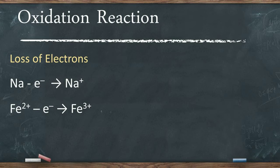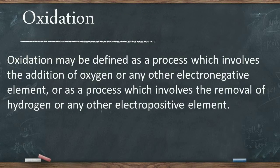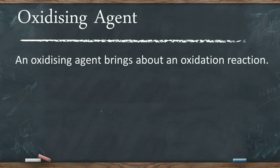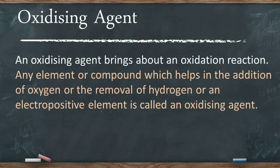An atom or an ion can lose electrons only when an electronegative element is added to it, or when an electropositive element is removed from it. Therefore, oxidation may also be defined as a process which involves the addition of oxygen or any other electronegative element, or as a process which involves the removal of hydrogen or any other electropositive element. Oxidation does not occur by itself — it is an oxidizing agent which brings about an oxidation reaction. An oxidizing agent is any element or compound which helps in the addition of oxygen or the removal of hydrogen or an electropositive element.